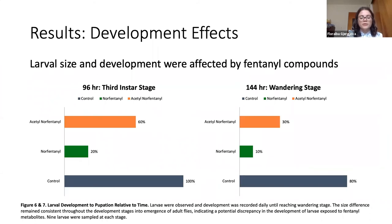Upon analyzing developmental notes taken throughout the experiment, developmental effects were apparent. Larval size was affected such that control larvae were largest, followed by the acetyl nor-fentanyl, and nor-fentanyl were smallest throughout all developmental stages. Developmental rates were also affected: while all groups reached second instar at the same time, at 96 hours all of the control reached third instar while only 20% of nor-fentanyl and 60% of acetyl nor-fentanyl also reached third instar. At 144 hours, 80% of control reached wandering while only 10% of nor-fentanyl and 30% of acetyl nor-fentanyl reached the same stage.